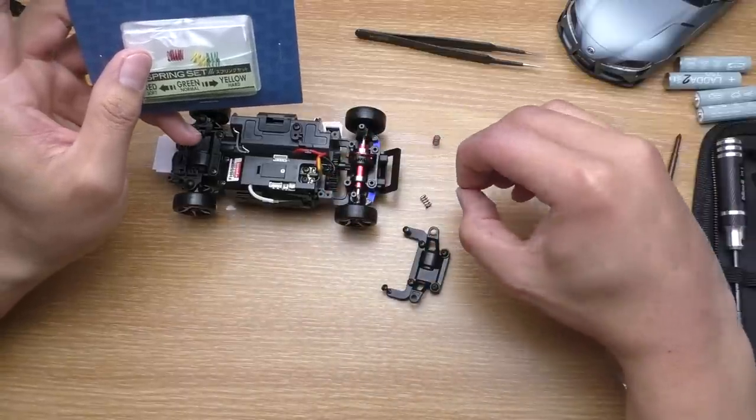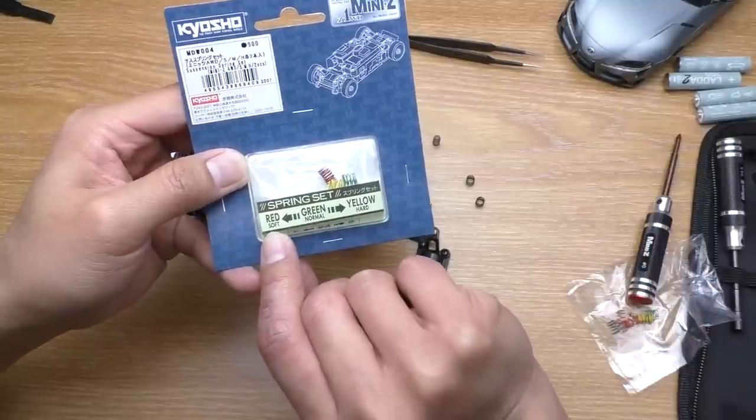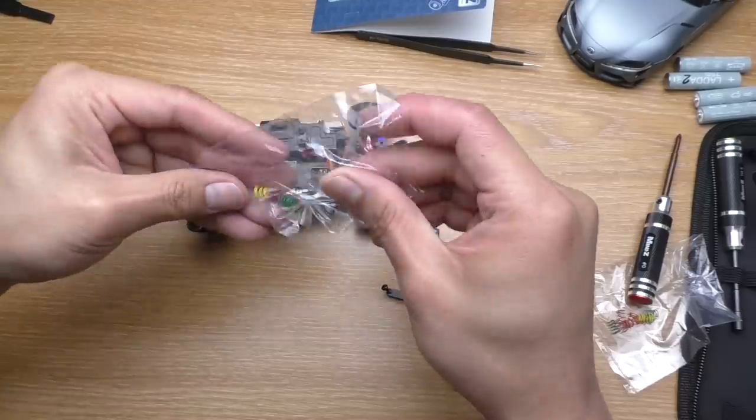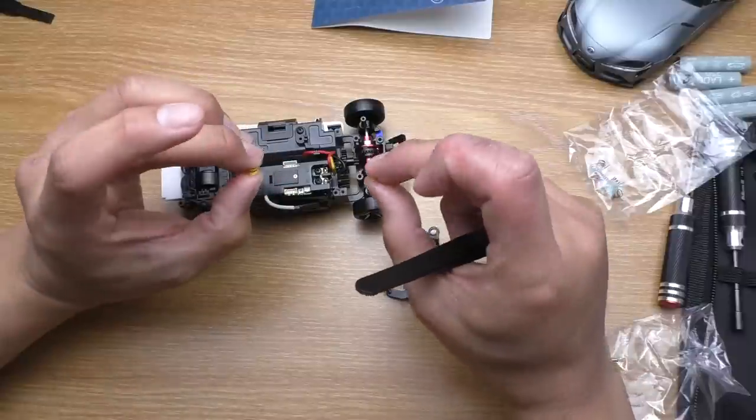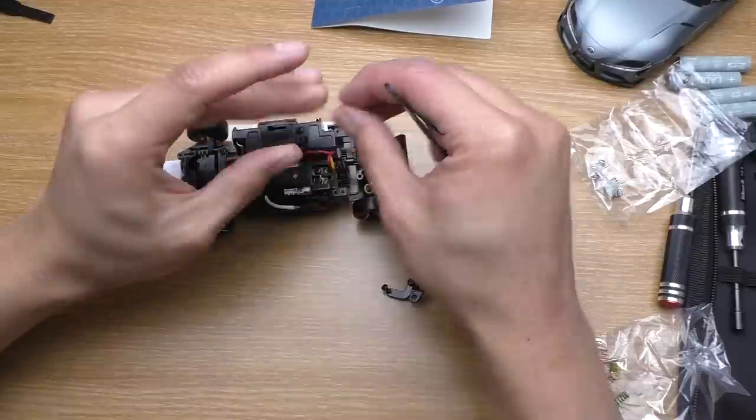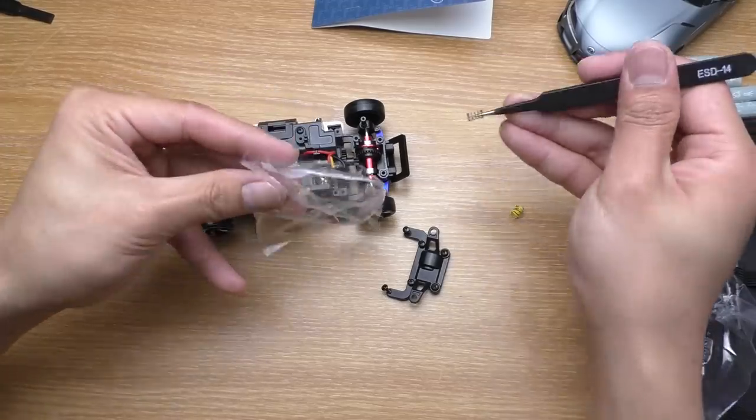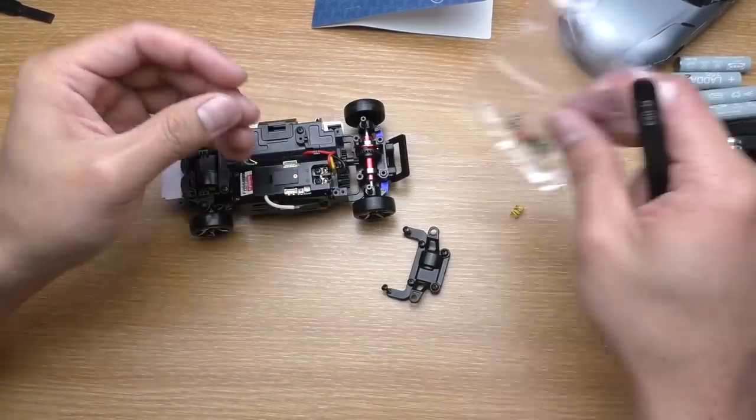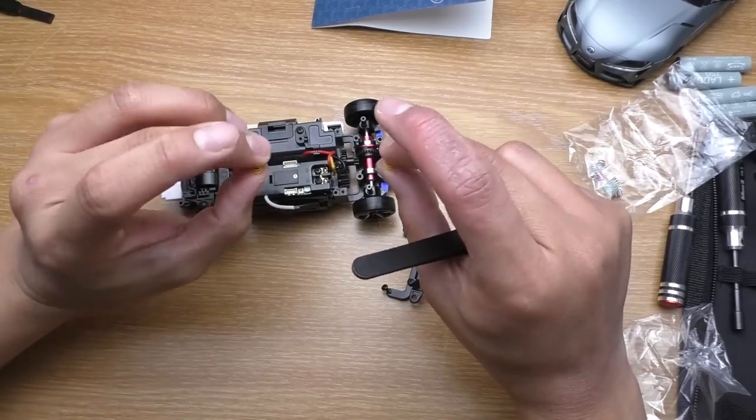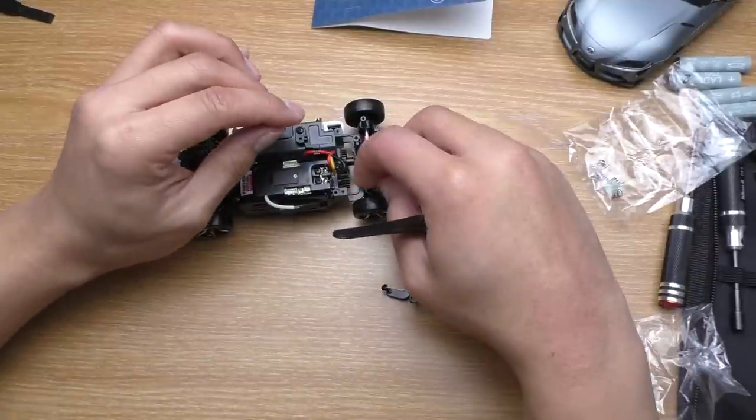At the back we're going to replace the soft springs with the hard one. We have the red which is soft, green normal, and yellow for hard springs, so I'm going to put the yellow springs in. Oh, these are much much stiffer than the original springs.